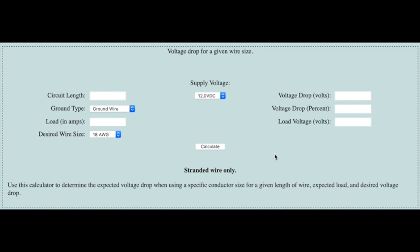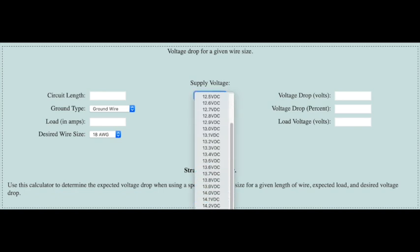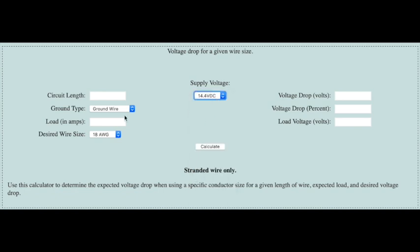This will tell you how much voltage you will lose over a given wire size and length of wire, depending on how much current goes through the wire. So we're going to go with a supply voltage of 14.4 volts. And we want a circuit length of 10 feet. And if we solve this for a 100 watt solar panel, we're looking at, let's say, 5 amps.